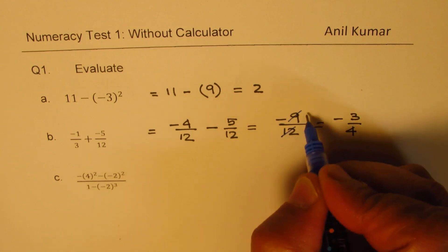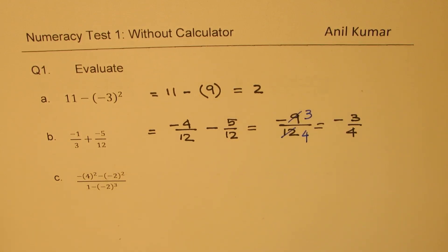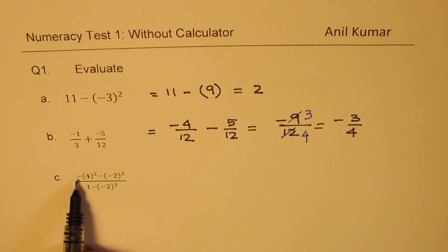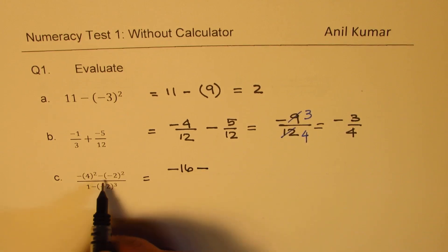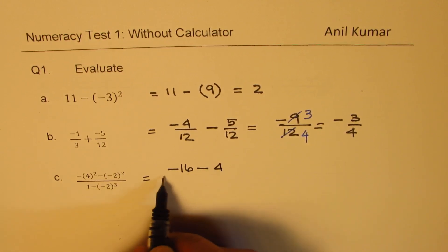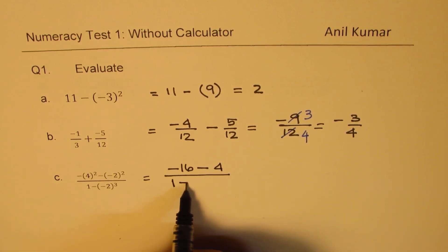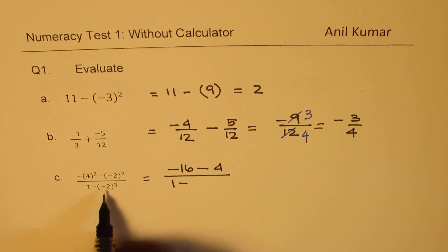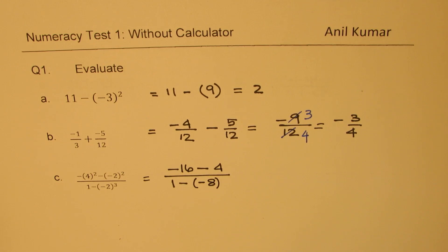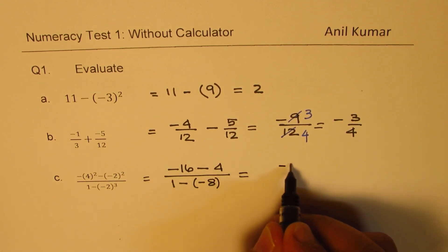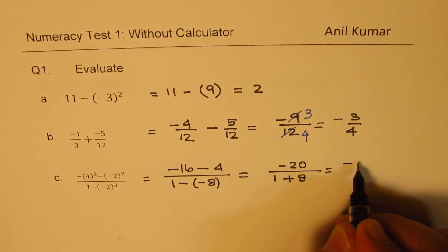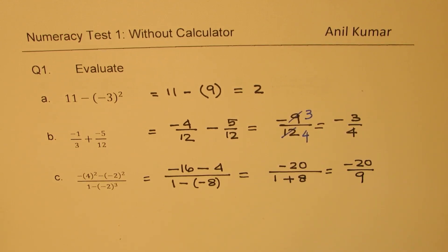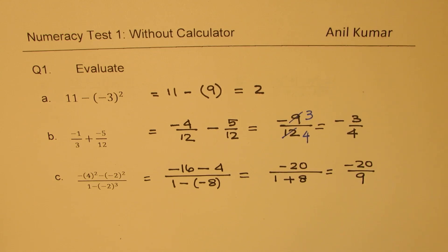We cancel with 3 to get 3 over 4. The next part is minus 4 whole squared minus (-2) whole squared. When the minus is outside, it remains as negative. 4 squared is 16. Then we have minus, and (-2) whole squared, which is positive 4. In the denominator, we have 1 minus (-2) cubed. The cube of a negative number is negative, so we get minus 8. That gives negative 20 in the numerator and 1 plus 8 in the denominator. So the answer is minus 20 over 9.